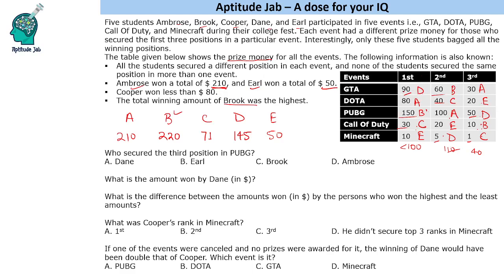These are the final winnings of the five people. Now we can answer the questions based on this set. Who secured the third position in PUBG? In PUBG, the third position was secured by Dane. The amount won by Dane is $145. The difference between the highest and lowest amounts: highest is $220, least is $50, so the difference is $170.